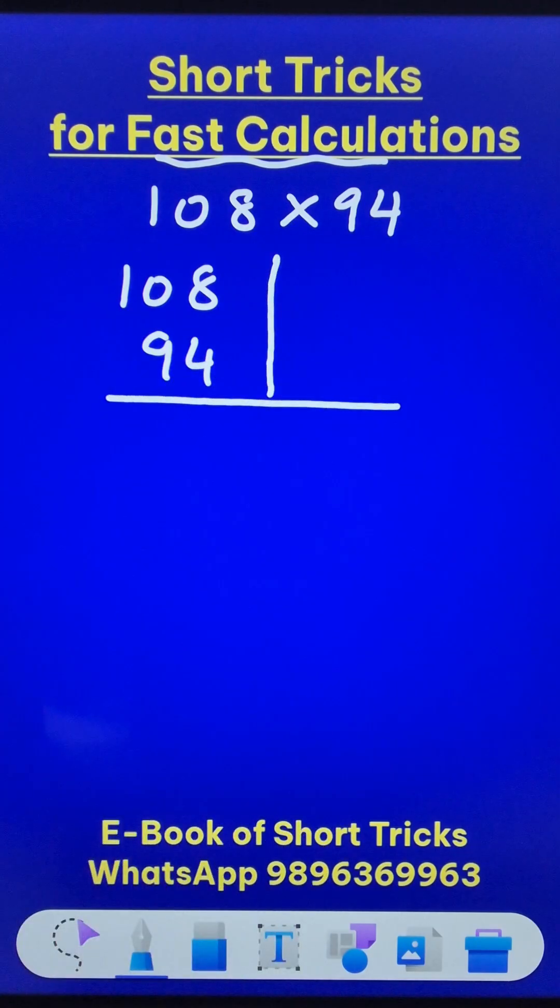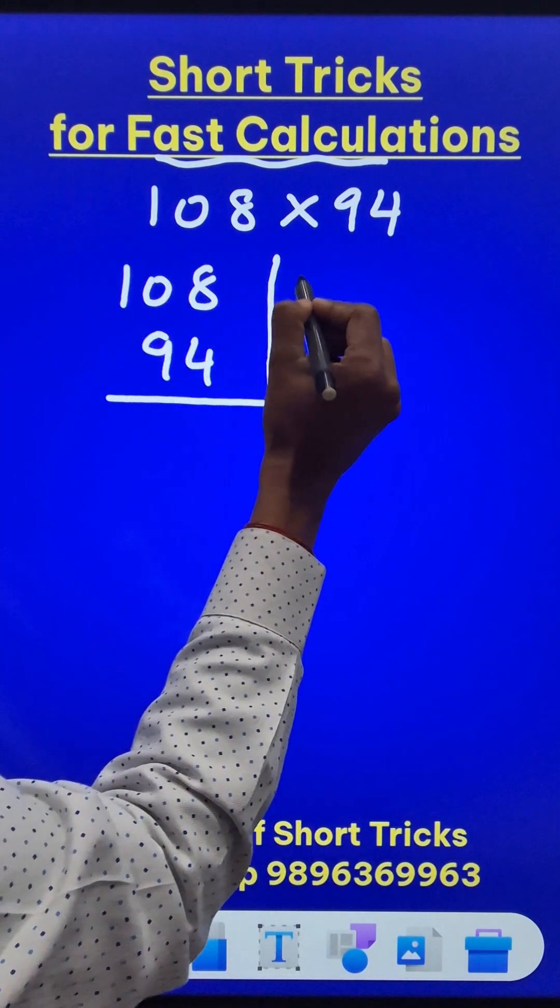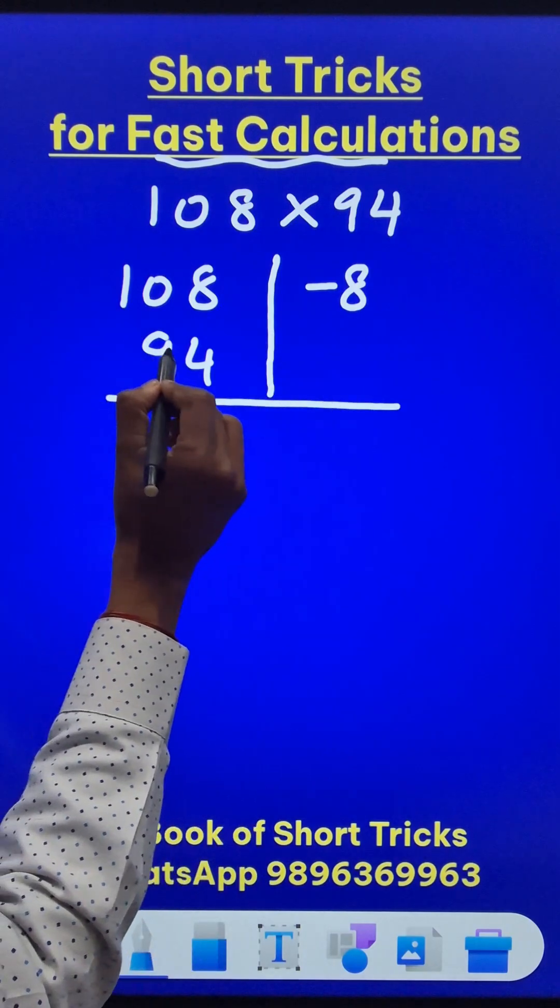I'll put a vertical line and a horizontal line like this. 100 minus 108 is negative 8 and 100 minus 94 is 6.